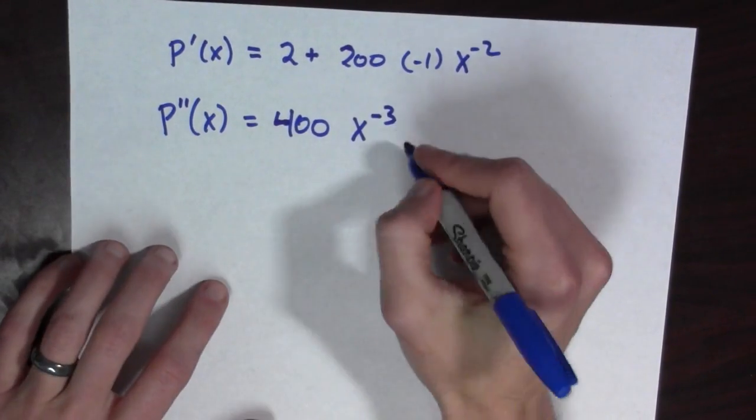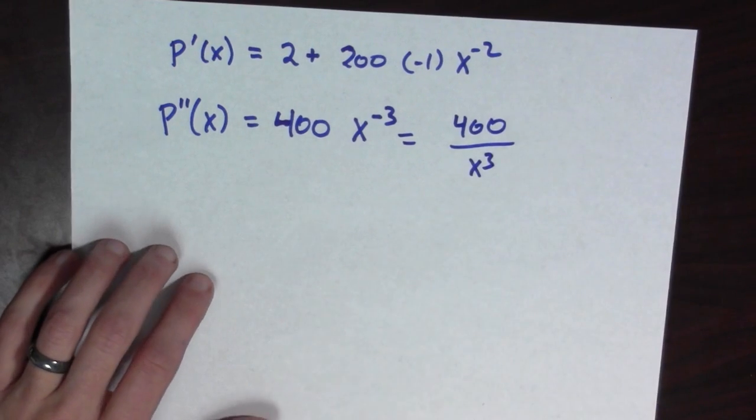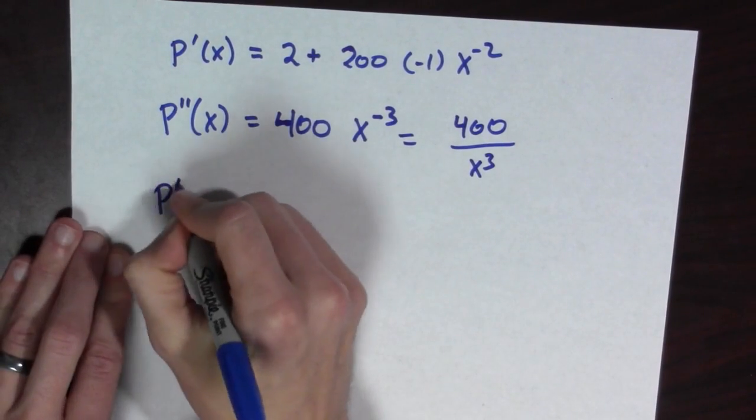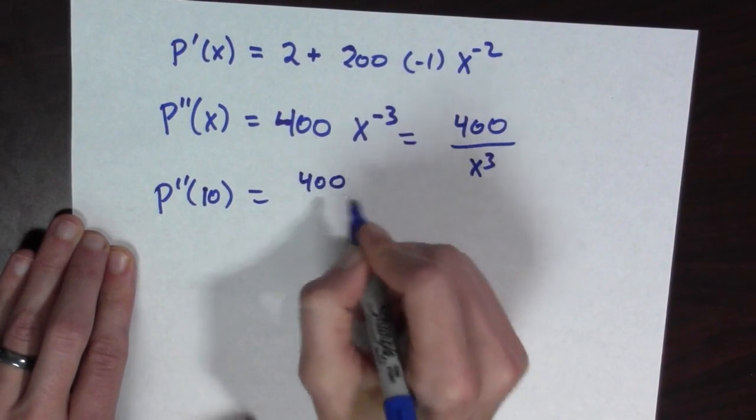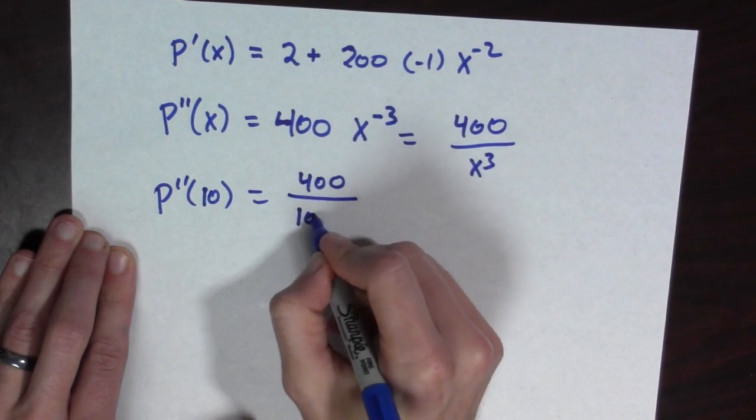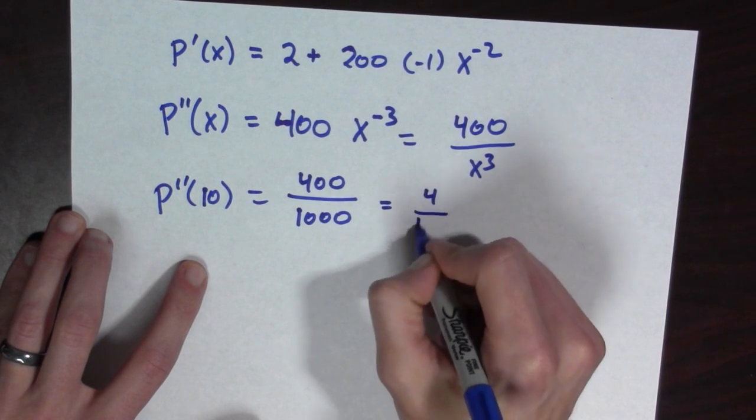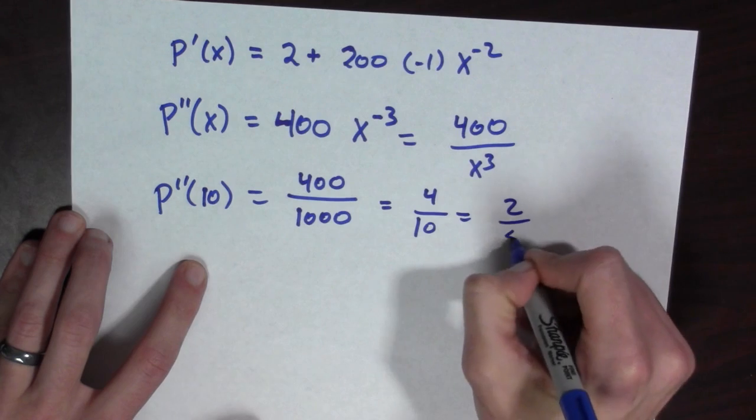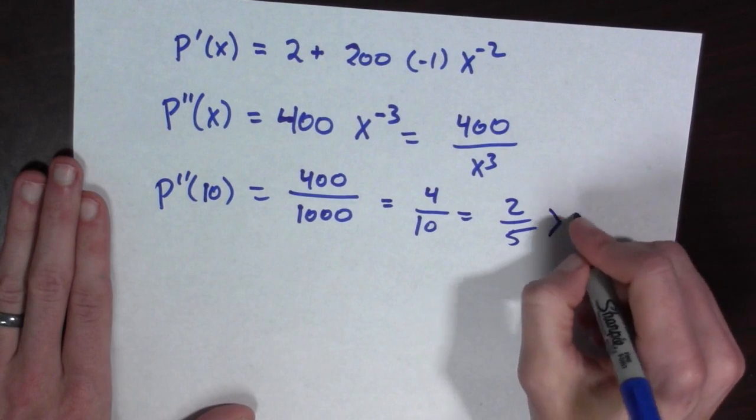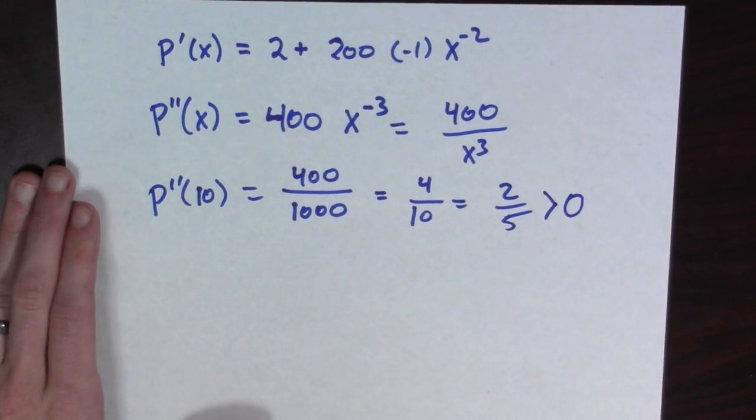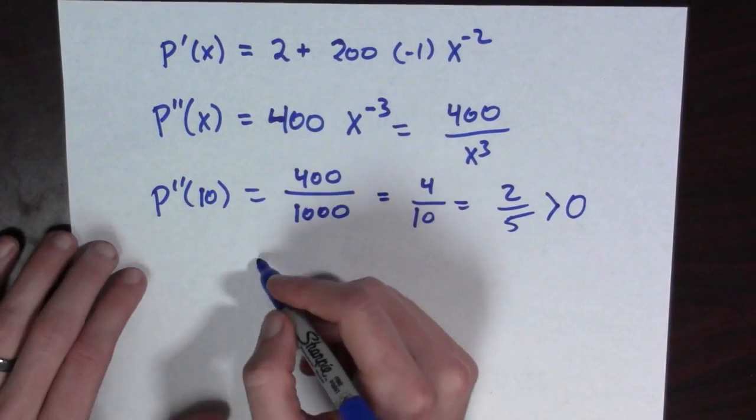Which is equal to, just so we are all very clear, 400 over x cubed. So if I plug in 10, p double prime of 10 is equal to 400 over 1,000, which is equal to 4 over 10 or 2 over 5. It's not real important what that is. All that's important is that this is greater than zero.